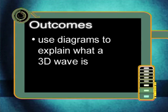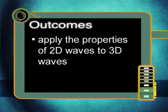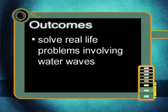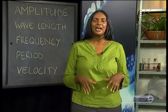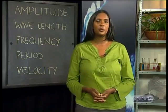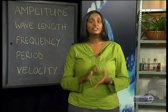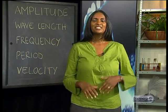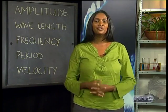By the end of this lesson, you should be able to use diagrams to explain what a three-dimensional wave is, apply the properties of two-dimensional waves to three-dimensional waves, and solve real-life problems involving water waves. Longitudinal waves and transverse waves on a slinky spring are only models of waves found in the real world. Real-life waves are a little more complex — they spread out from a source in all directions, and as a result they have width as well as height and length, and so are 3D waves. Water waves are a good example of 3D waves, so we will explore water waves to learn more about their properties.